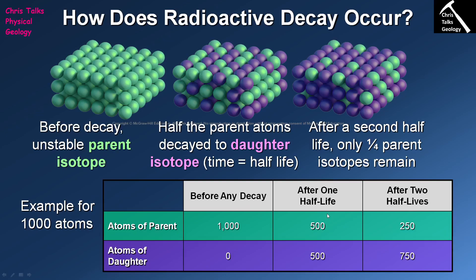After one half-life, 50% of the parent isotope will have turned into the daughter isotope. So after one half-life we have 500 atoms of the parent isotope left, and 500 atoms of the parent isotope have now turned into the daughter isotope. After a second half-life we lose half of that 500, giving us 250 atoms of the parent isotope and 750 atoms of the daughter isotope. If you add the numbers in each column together, the total is always the same — you still have 1,000 atoms.